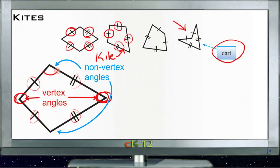The other two angles, this one up here and this one down here, are the non-vertex angles. And with any kite, the non-vertex angles are equal.